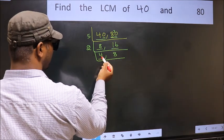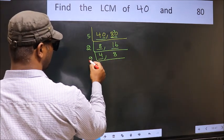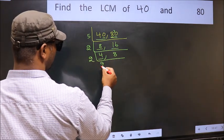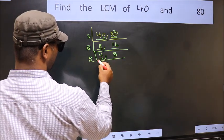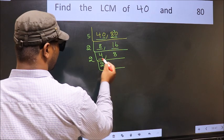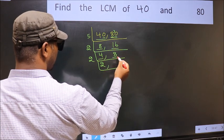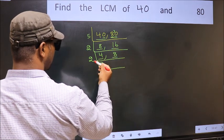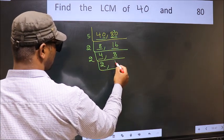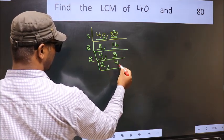Now here we have 4. 2 times 2 is 4. The other number is 8. When do we get 8 in the 2 table? 2 times 4 is 8.